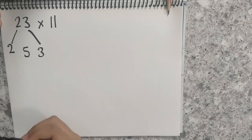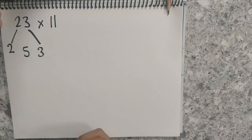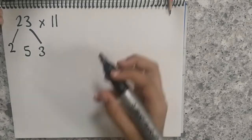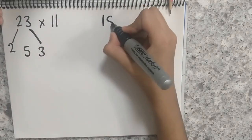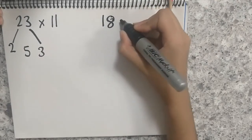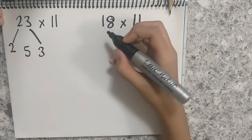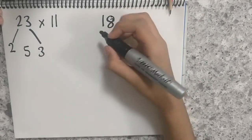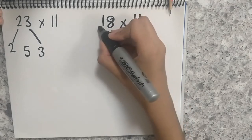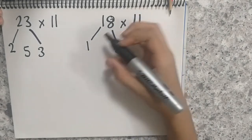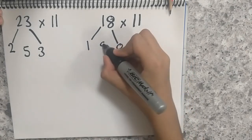Now let us take a second number, and that number can be 18. So 18 into 11 is 198. Because the 1 goes here, the 8 goes here, 1 plus 8 is 9.